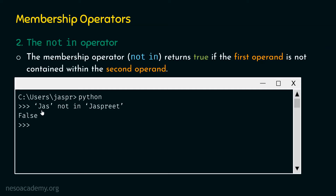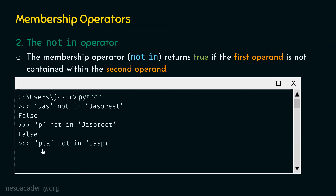It returns false because it is not the case that `just` is not in `jaspreet` — `just` is actually there. What about `p not in jaspreet`? This also returns false. What about `pta not in jaspreet`? This returns true because this exact sequence is not contained in the string — we are talking about the exact sequence, not individual characters. We are done with the `not in` operator.